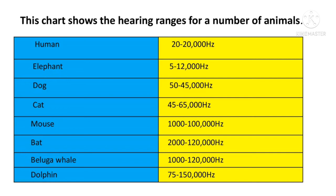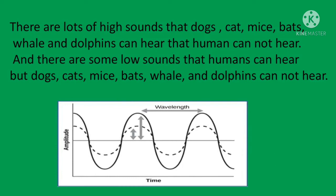Sound frequencies above the range of the human ear are called ultrasound, and those below are called infrasound. Though we are capable of distinguishing between about 1,400 pitches, most important speech-related sounds fall within a narrow, relatively low spectrum. The hearing range of humans is between 20 and 20,000 Hz. Many high sounds that dogs, cats, mice, bats, whales, and dolphins can hear are beyond human hearing. The human hearing range depends on both the pitch of the sound, measured in hertz, and the loudness of the sound, measured in decibels.